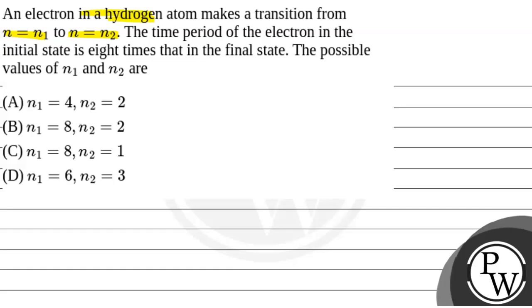The time period of the electron in the initial stage is 8 times the time period in the final stage. The initial stage time period is 8 times the final stage. What are the possible values of n1 and n2?